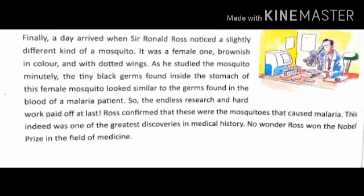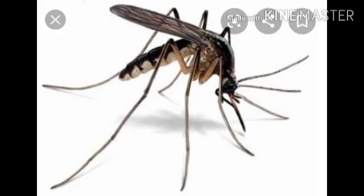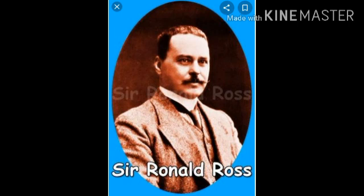This indeed was one of the greatest discoveries in medical history, and Professor Ronald Ross won the Nobel Prize in the field of medicine. Through this experiment it was confirmed that not all mosquitoes are responsible for malaria, but the female species of mosquito which is brownish in color with spotted wings — named female Anopheles — is responsible for causing malaria. This was discovered by Sir Ronald Ross, who was awarded the Nobel Prize in medicine in 1902.